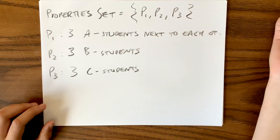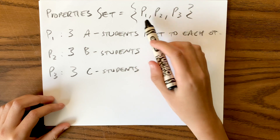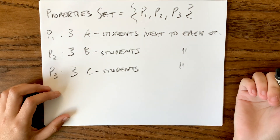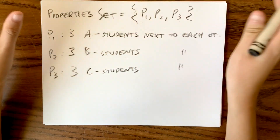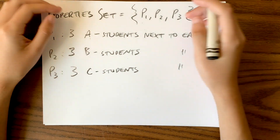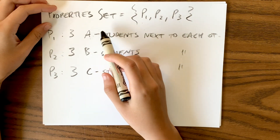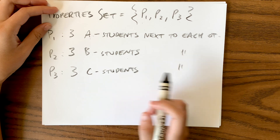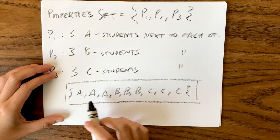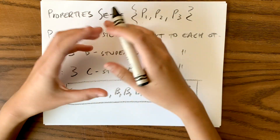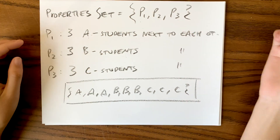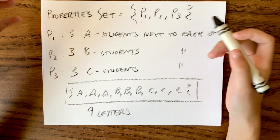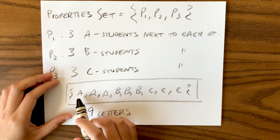An easier way to conceptualize this problem: we have nine letters — AAA for the three psychology students, BBB for the three physics students, and CCC for the three statistics students. So how many ways can we arrange these nine letters into a single line such that there are no three same letters next to each other? We have three A's, three B's, and three C's, and we want to count unique arrangements with no three consecutive identical letters.